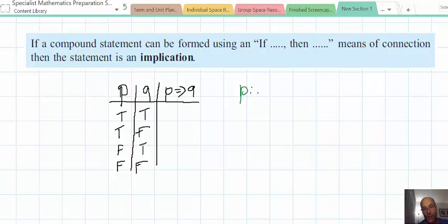So, we've got, let's define P as you achieve an A for this specialist maths subject. Woohoo! For specialist maths, you achieve an A.